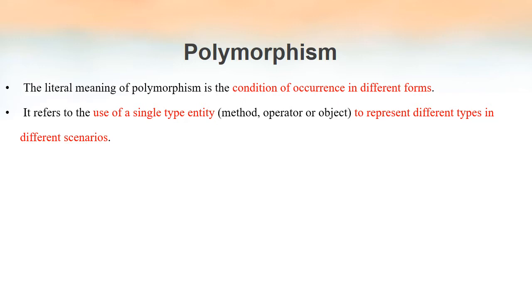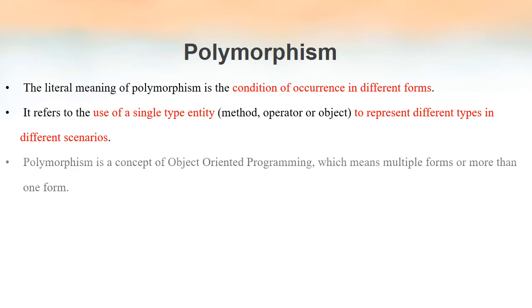So polymorphism refers to the use of a single type entity — it can be a method, an operator, or an object — to represent different types of operations in different scenarios. It is a concept of object-oriented programming that means multiple forms, or more than one form. Poly means many and morphism means forms, so polymorphism means many forms.